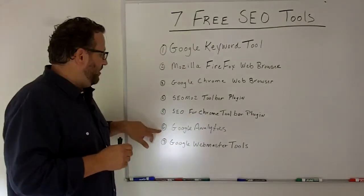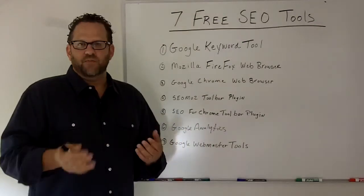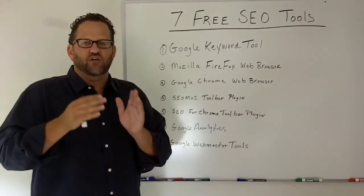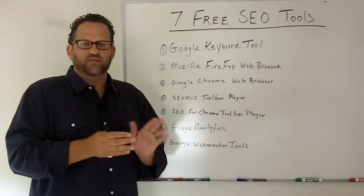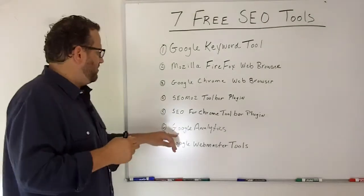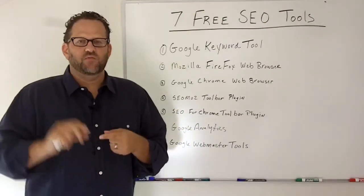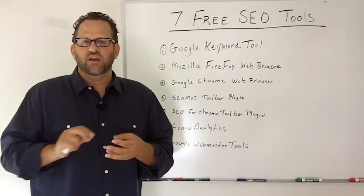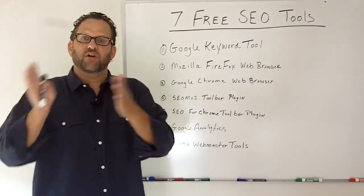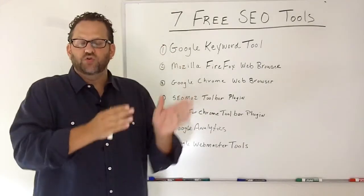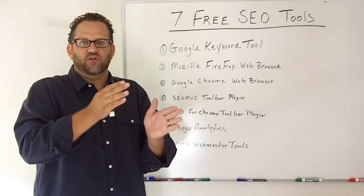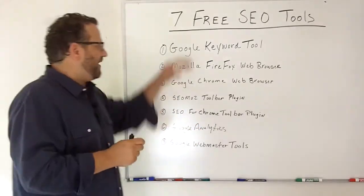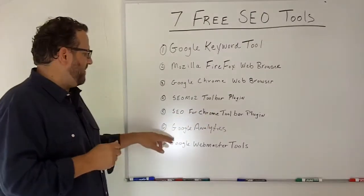The sixth tool that I use that's totally free is Google Analytics. You have to be able to measure and track your results — if you don't know what's working and what's not, you don't know how to fix it. Google Analytics will tell you your search volume, show you if you get a sudden drop, what keywords are bringing traffic to your site, and whether your social media or feeder sites are driving traffic. You need to be able to track what you're doing for SEO in order to improve upon it.